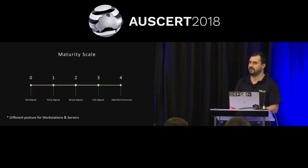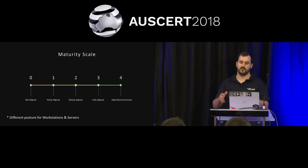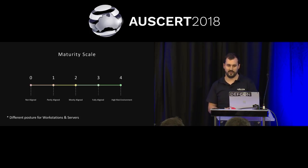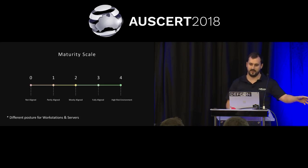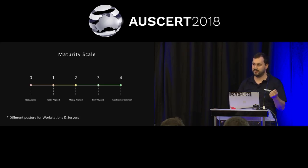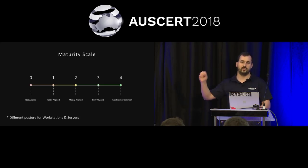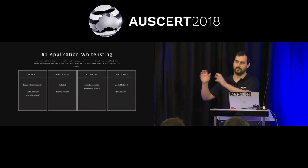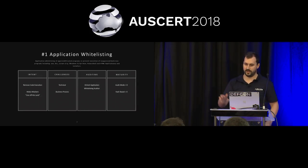Just to complicate things a little bit, there's also a maturity scale applied to each one of these eight strategies — from zero, where you haven't done it at all or you're not aligned with the intent of the control, to four, which is a full high-risk environment where you've implemented it to the letter of the standard.